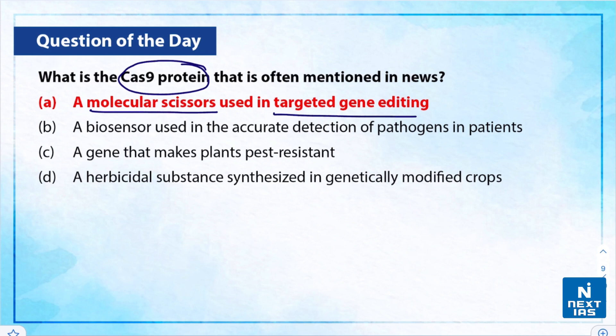As we know, the Cas9 protein acts as molecular scissors and is used in targeted gene editing. Therefore, the correct answer is option A. With this, we wrap up today's edition of Topic of the Day. I hope you liked the video — I will see you with another topic tomorrow. Till then, take care and stay tuned.